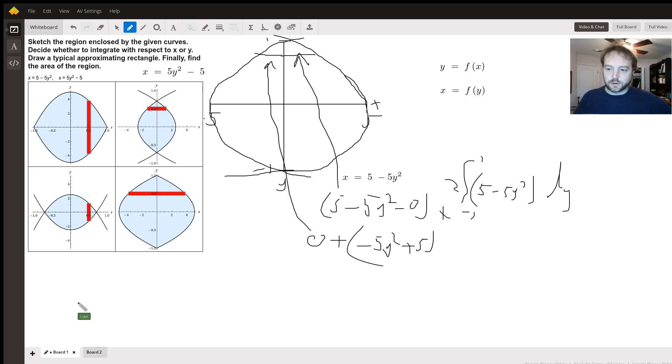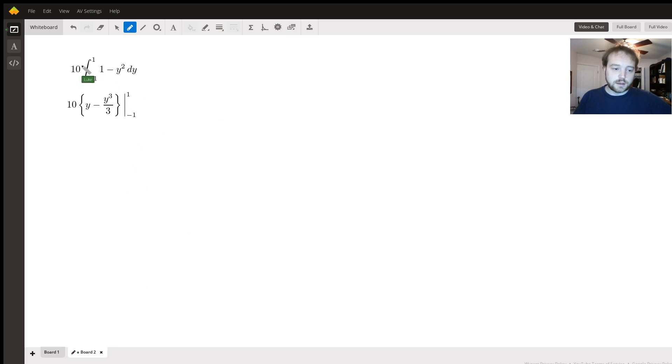So I worked that out on another screen. And as you can see, I factored out the 10 there, which is going to be the 5 times the 2, 1 minus y squared dy. It's going to give you y minus y cubed over 3 from negative 1 to 1. You could use the symmetry argument here, but I'll go ahead and expand this out.